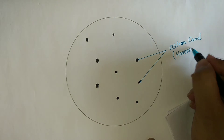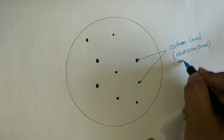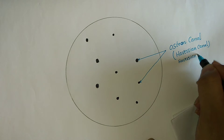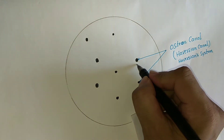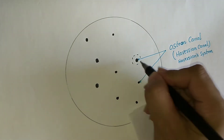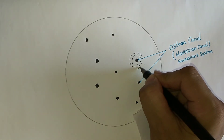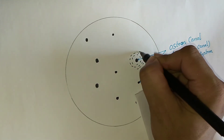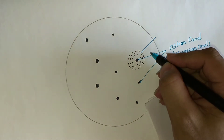The osteone is also called the Haversian system or Haversian canal. The space in the osteone that contains blood vessels and nerves is the central or Haversian canal. Most of the compact bone consists of osteones which are usually oriented along the long axis of the bone. Each osteone consists of a layer of concentric lamellae arranged around the central canal.